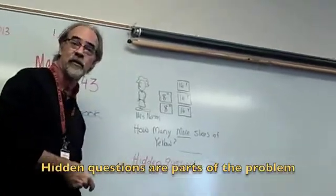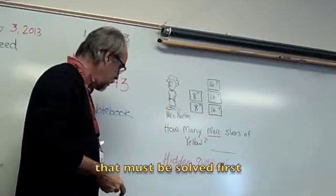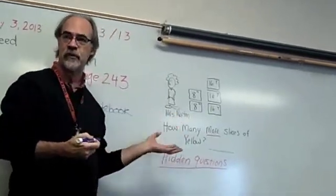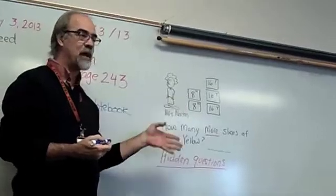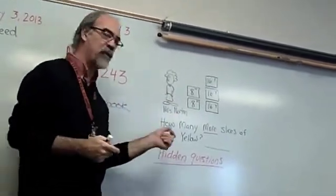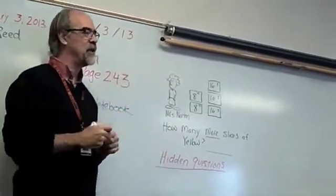In order to figure out how many more yellow slices than white, what's one thing that we need to do? We need to figure out some things. There's some steps in here that we need to take that the book doesn't say, oh, by the way, to get the answer, you've got to do this and then do this. So, what's one step we need to do?